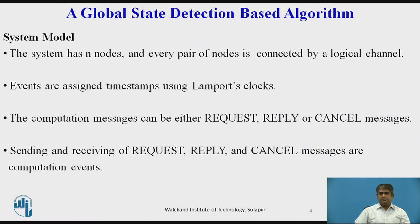System Model: The system has N nodes and every pair of nodes is connected by a logical channel. Events are assigned timestamps using Lamport's clock. The computation messages can be either request, reply, or cancel messages. To execute a P-out-of-Q request, an active node i sends a request to other nodes and remains blocked until it receives a sufficient number of reply messages.